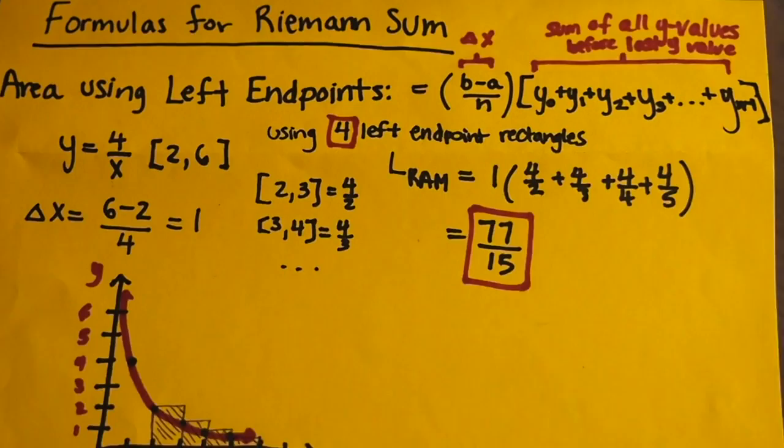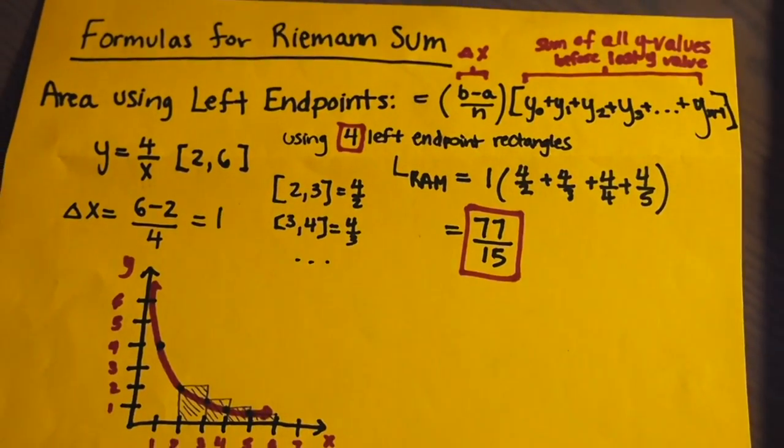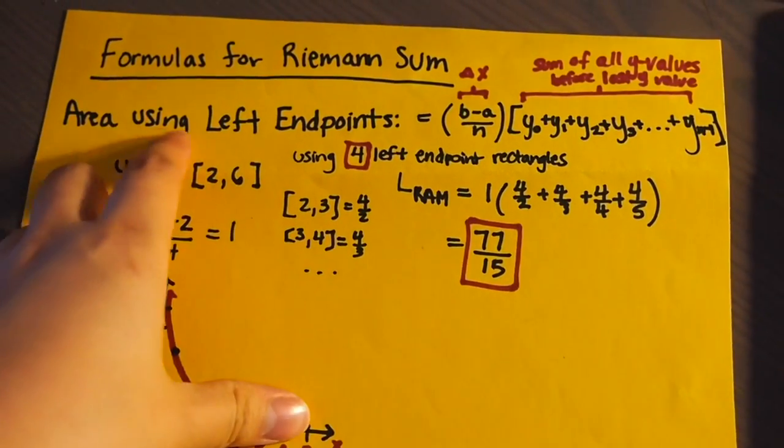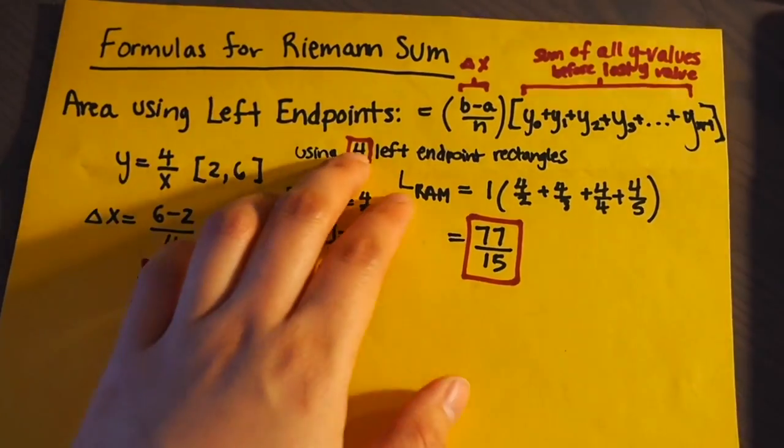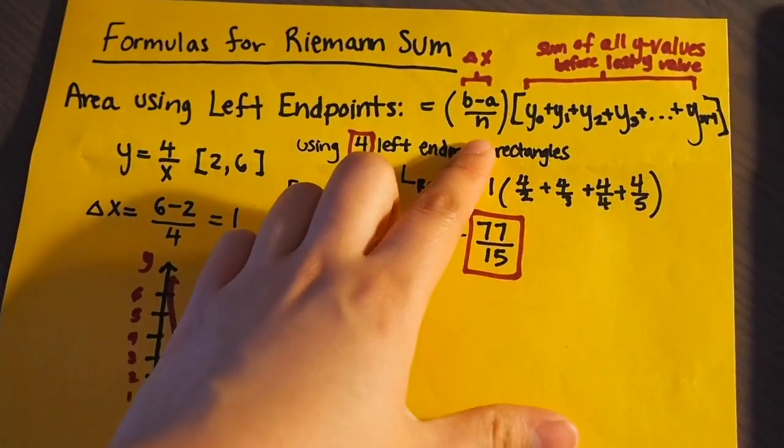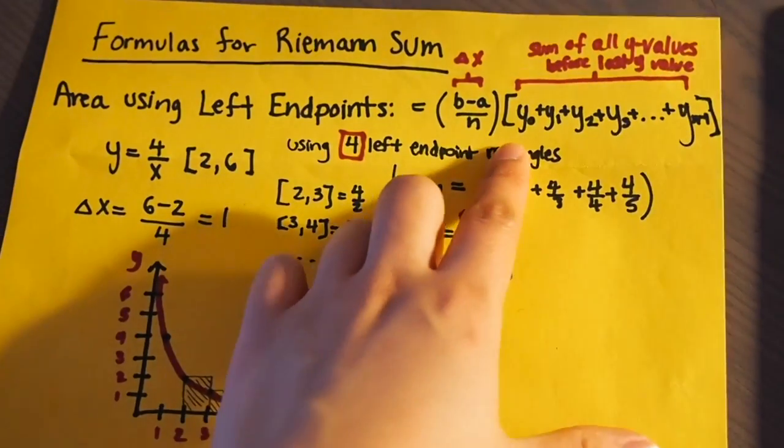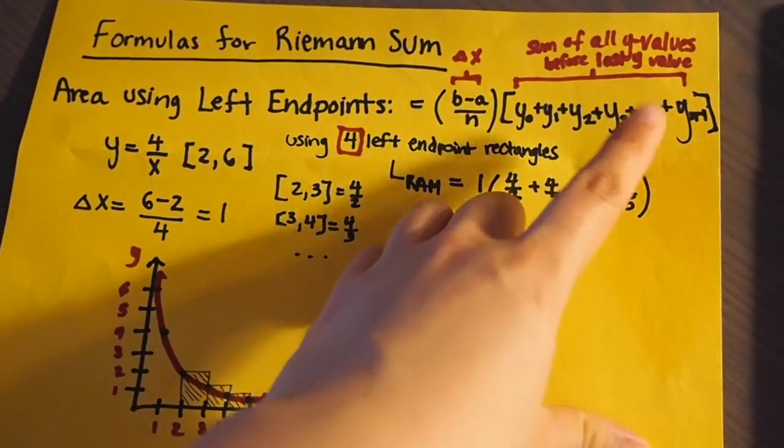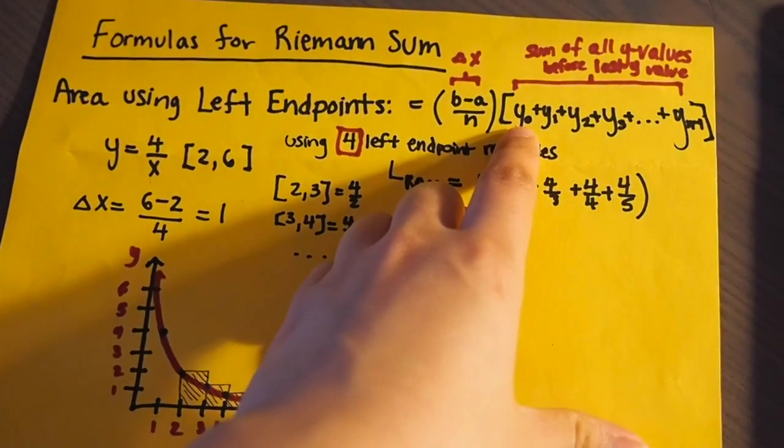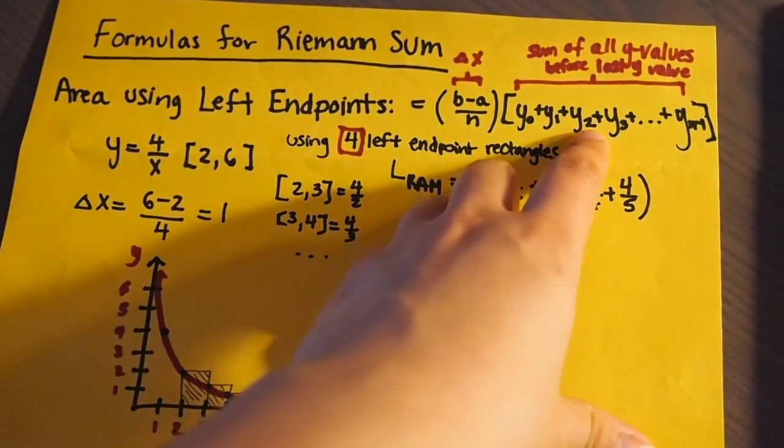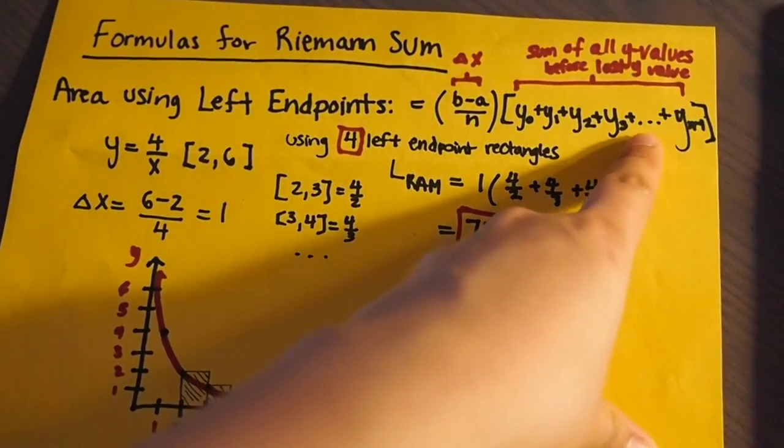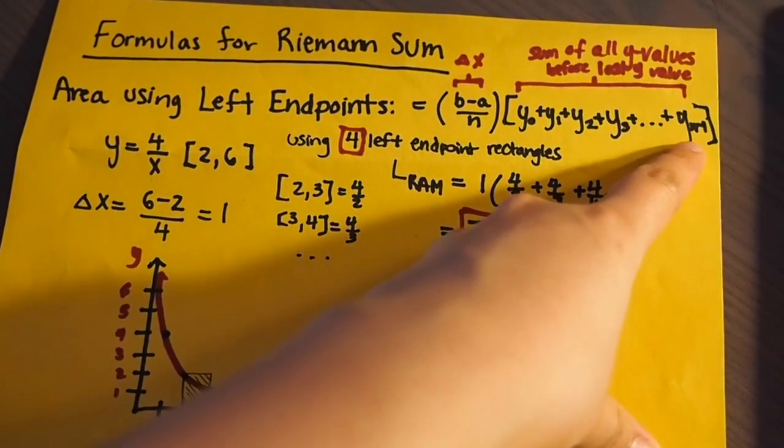This is an example of how to do left Riemann sum very quickly. The area using left Riemann sum or endpoints is b minus a all over n, which is the delta x, times the sum of all the y values before the last y value. So it would be y initial plus y1 plus y2 plus y3 plus all the values until y of n minus 1.